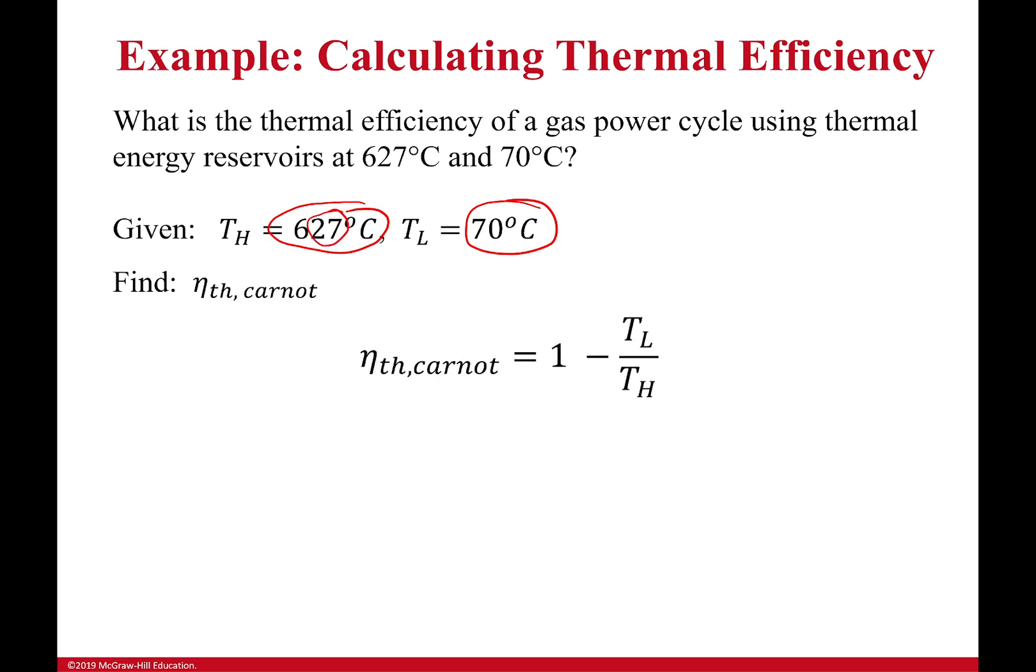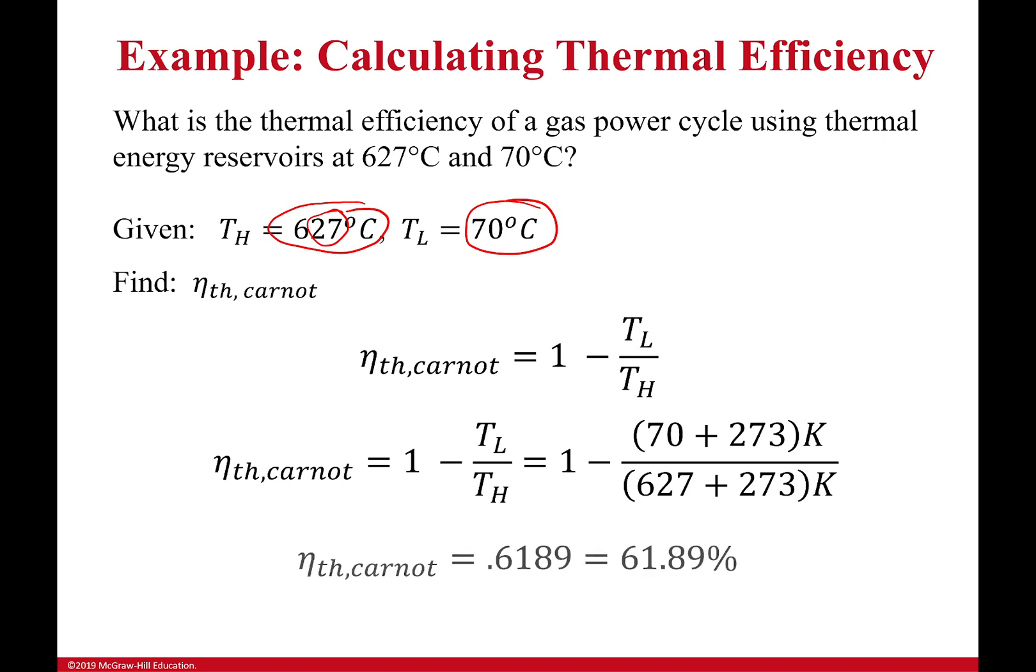So, I know my thermal efficiency for the Carnot cycle is just 1 minus T low over T high. I plug that in there. You're like, what? Yeah, it's really this simple. And I have my answer.